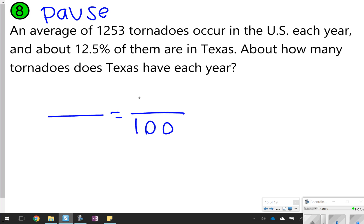So using the percent proportion, I can automatically put the 12.5% over 100. It says an average of 1,253 tornadoes occur in the United States each year, and about 12.5% of them are in Texas. So we know that this is all of the tornadoes that happen in the United States, and only a part of them happen in Texas. Since all of the tornadoes are 1,253, I'm going to put 1,253 on the bottom, and then x will be the representation of the tornadoes that happen in Texas.